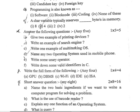Section four: Answer the following questions, any five, one mark each. (a) Give two examples of a printing device. (b) Write an example of a search engine. (c) Write one example of a multitasking OS. (d) Name any two operating systems used in mobile phones. (e) Write some unary operators. (f) Write down some valid identifiers in C.